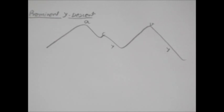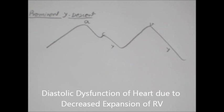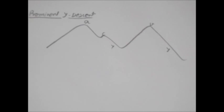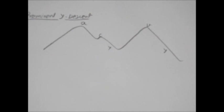The basic idea in prominent Y descent is that there is a very large amount of blood in the right atrium. Either due to less ventricular filling or due to large amount of blood coming from left atrium or due to tricuspid regurgitation, which will lead to a very fast flow of blood during rapid ventricular filling, which will lead to prominent Y descent.